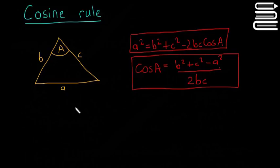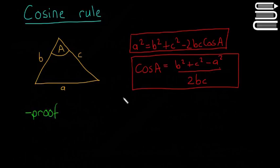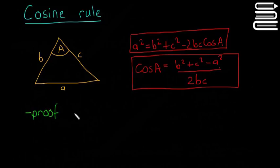We're going to look at the proof in this video, because you can be asked to do the formal proof of the cosine rule in the exam. The next videos will look at some examples. If you just want to go straight to the examples, you can skip this video and go to the next — there'll be a link at the end.